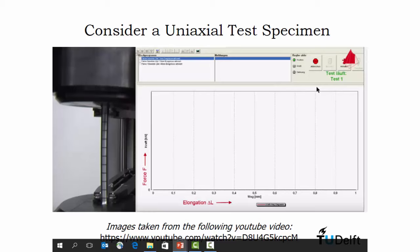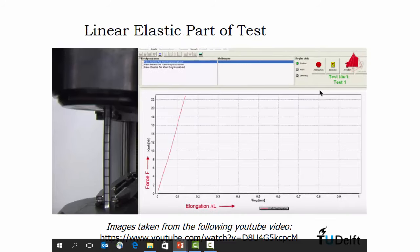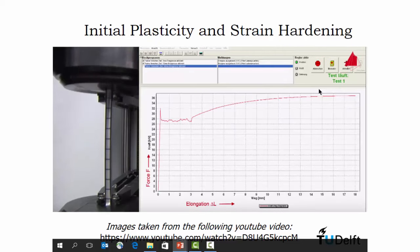If we mount this uniaxial tensile specimen in a testing machine, it's a cylindrical specimen gripped at the two ends, and we load it under displacement control and plot force versus elongation, what we'll see is initially the force displacement behavior will be linear. We expect that, a linear elastic material. However, at some point it's going to plastically deform. And this isn't stress versus strain, it's force versus elongation, so be aware of that.